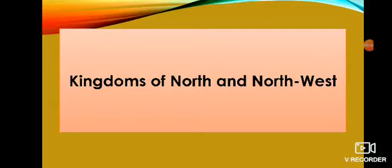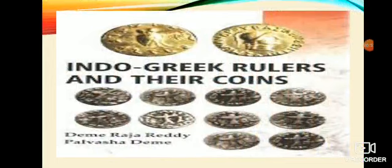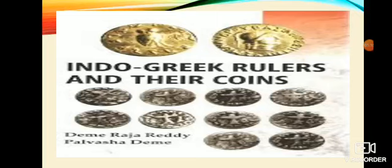While the Sangham literature was being written in the south, many tribes especially from Central Asia had crossed the Hindu Kush and entered India, taking advantage of the absence of a strong kingdom after the decline of the Mauryans. These were the Indo-Greeks or Bactrian Greeks, the Sakas or Scythians, the Pahlavas, Parthians, and the Kushans.